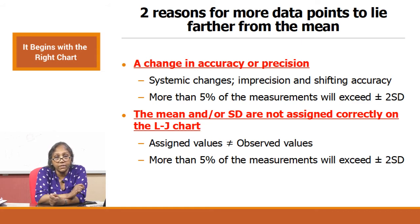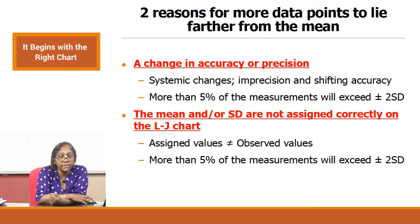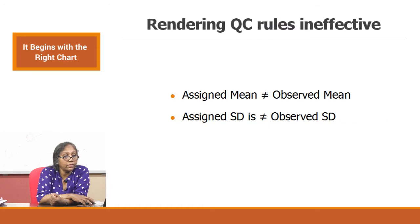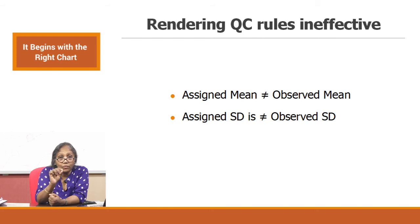The manufacturer's mean and SD are assigned on the chart, which may not be suitable in your laboratory because the mean you are observing could be different from the mean that has been assigned. Similarly, the SD you have put in may not match the SD you are observing. These are the two main reasons which render QC rules ineffective: assigned mean not the same as observed mean, and assigned SD not the same as observed SD.